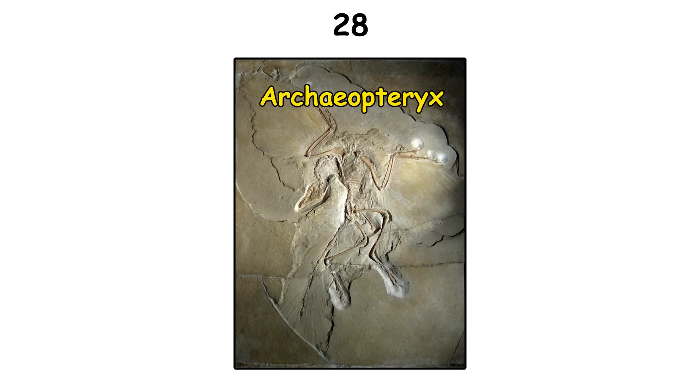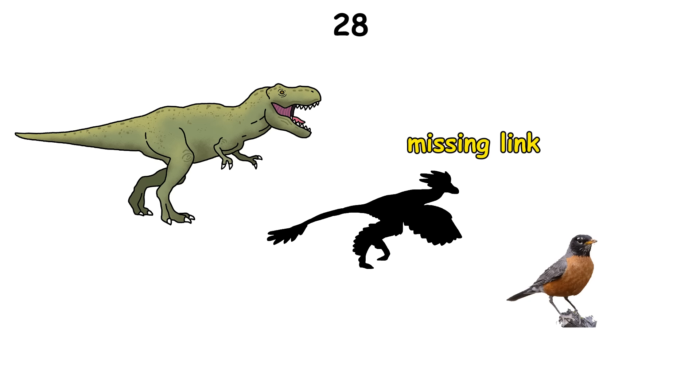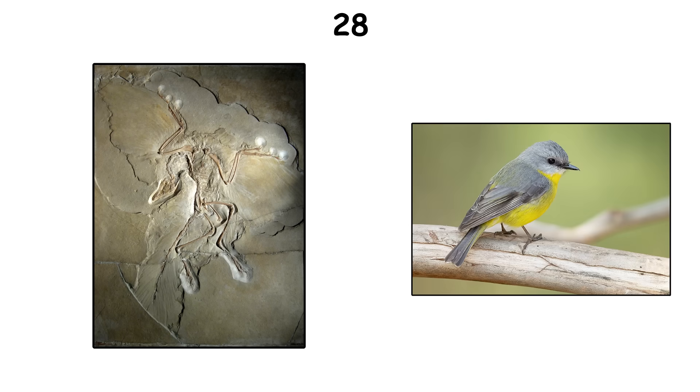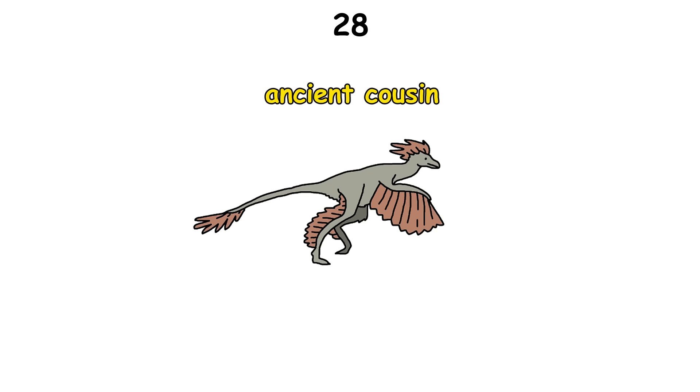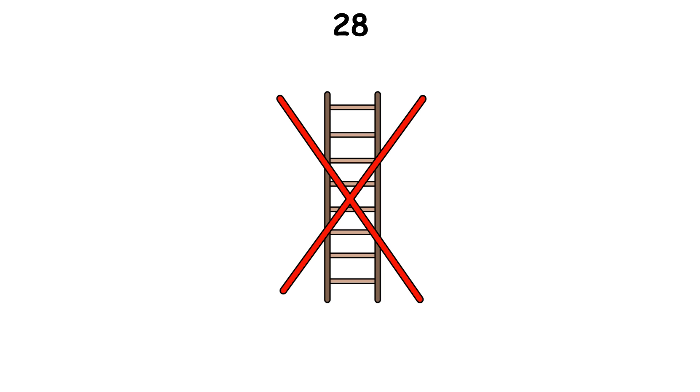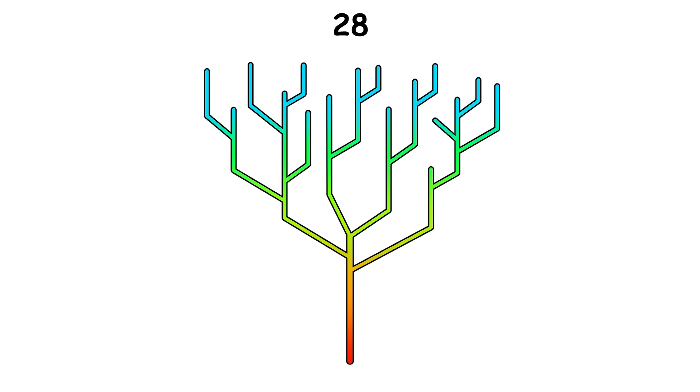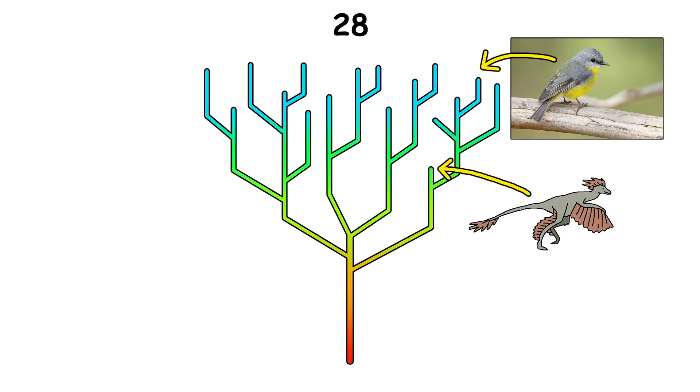Archaeopteryx, the famous fossil with both feathers and reptilian features, is often called the missing link between dinosaurs and birds. The truth is that it's not the direct ancestor of all modern birds. Think of it more like an ancient cousin. Evolution is less like a straight ladder and more like a bushy tree with many different branches, and Archaeopteryx is just one twig on the branch that led to birds.